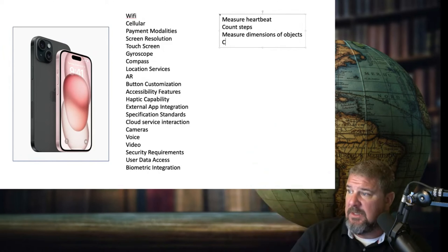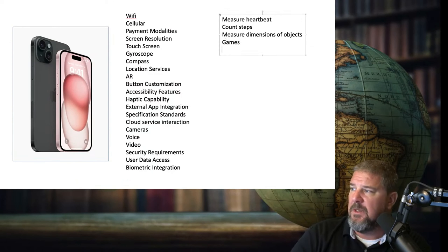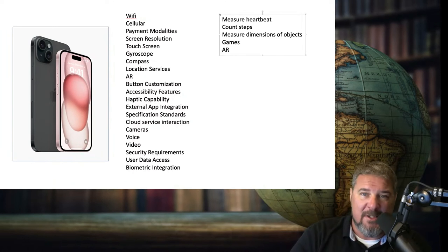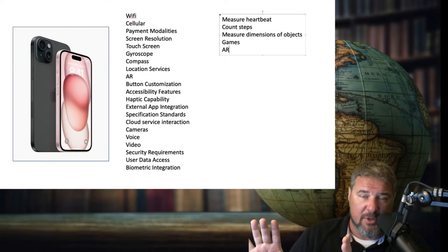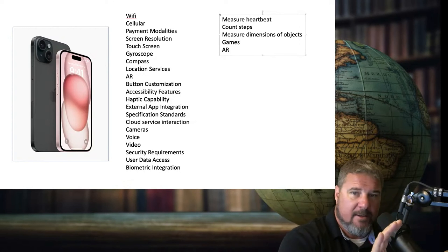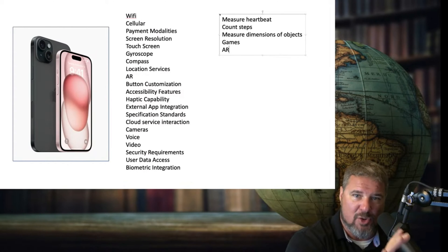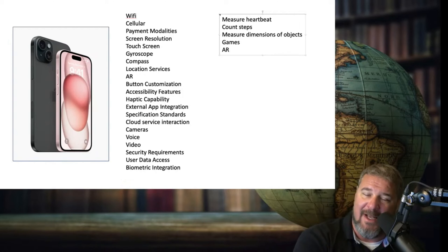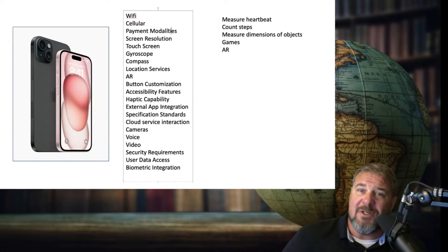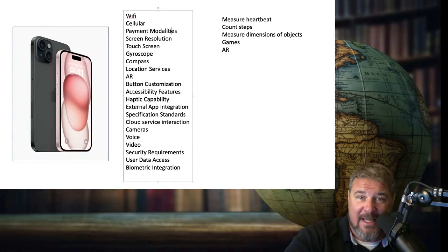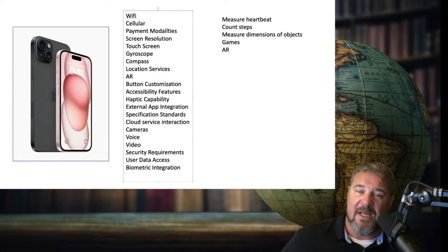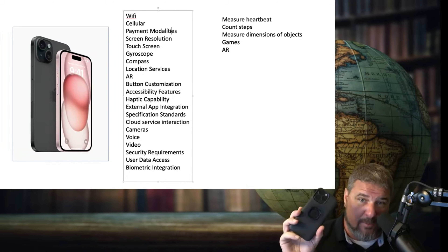You've got a compass on there, you can find your direction, you got games you can play, you can use different things to control the games. There's AR, augmented reality — you can make it look like a dinosaur is running through your living room, or when you're shopping for furniture, you can point to your living room and put that furniture in your house to see what it would look like there. You can do all that with your phone, but somebody has to develop that. In order to develop those kinds of applications, the application developers have to know what's in the platform of the phone.